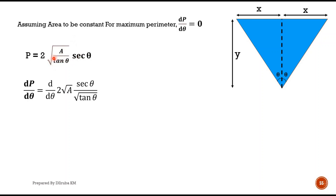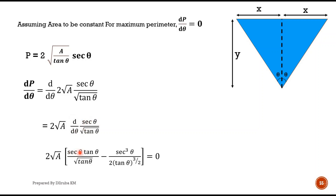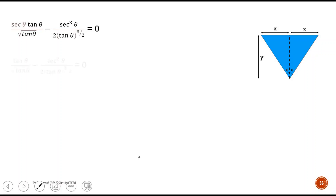We have P = 2√A × sec θ / √tan θ. Differentiating with respect to θ: d/dθ of (sec θ / √tan θ). Since 2√A is a constant it comes outside. Differentiating gives: [sec θ · tan θ / √tan θ] − [sec³ θ / (2·tan θ^(3/2))]. Setting dP/dθ = 0 and cancelling sec θ from both terms.